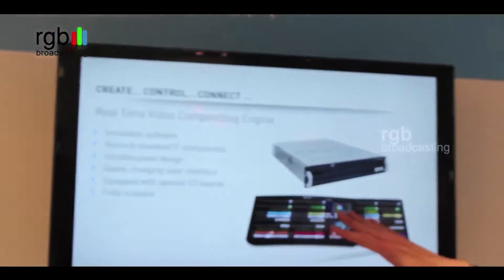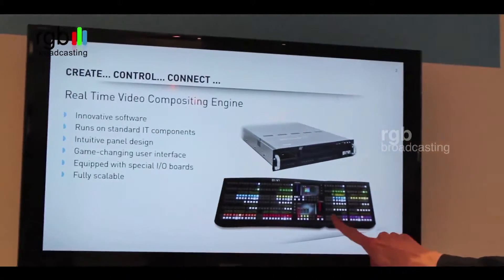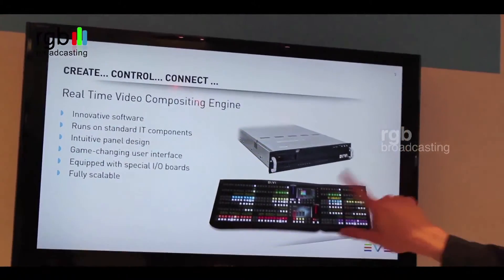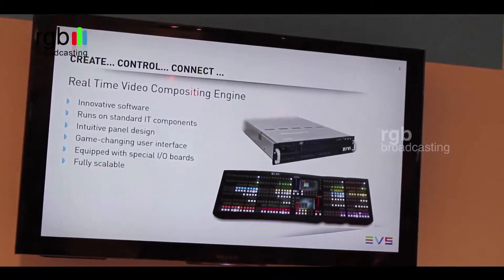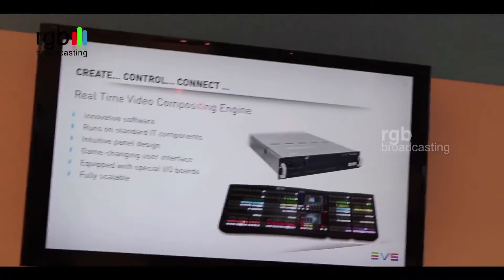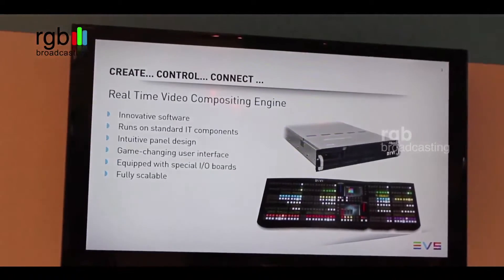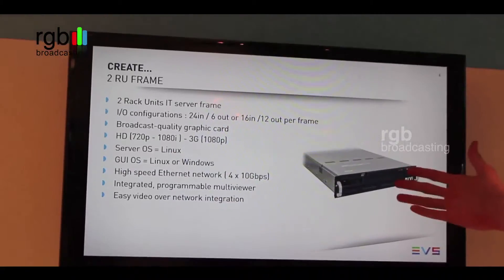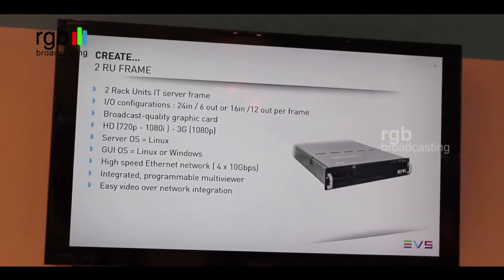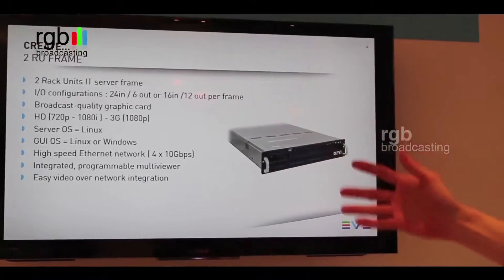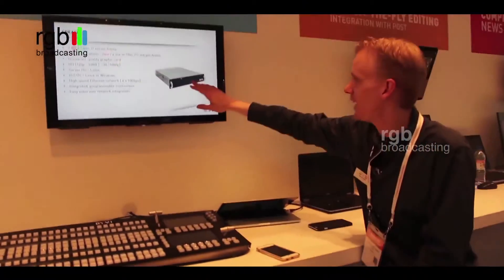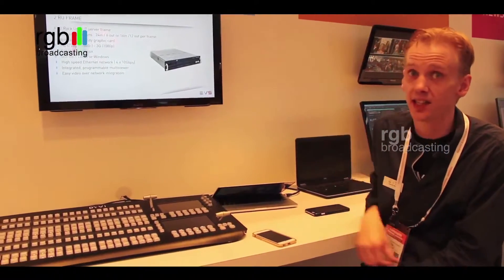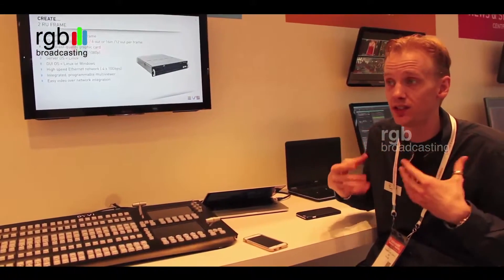The system consists of a panel — what we have here is a basic panel, but we can attach more modules, so it's modular and expandable. This box is our mainframe. A standard system comes with the mainframe, the panel, and the computer that runs the graphical user interface. The mainframe configurations are 24 in / 6 out, or 16 in / 12 out per frame. You can start small, and if your productions or needs grow, you just add another frame which connects via internet connection, and for the user it's seen as one big frame.